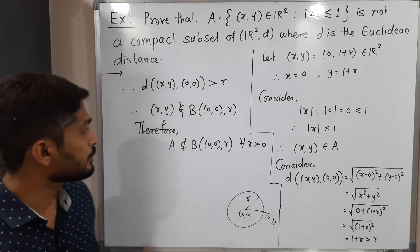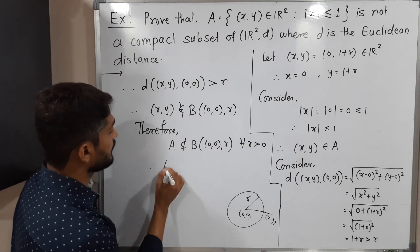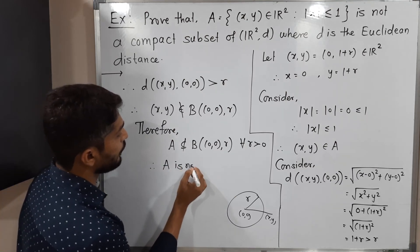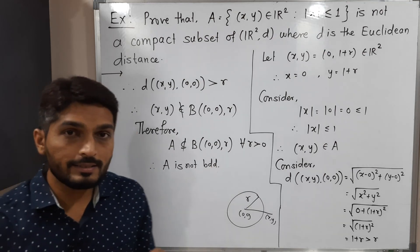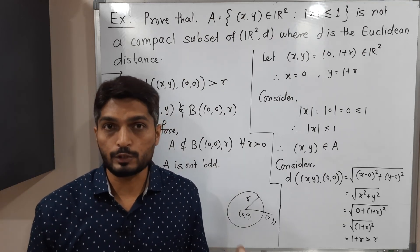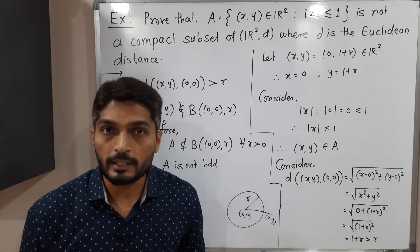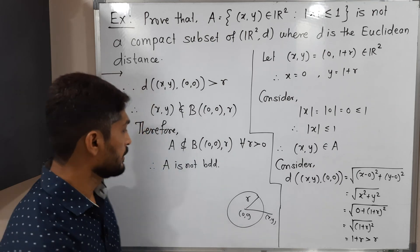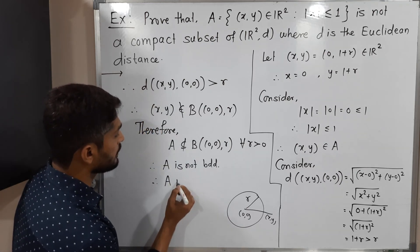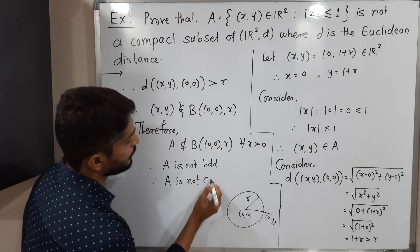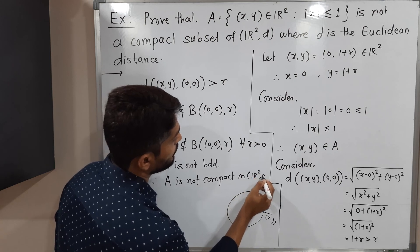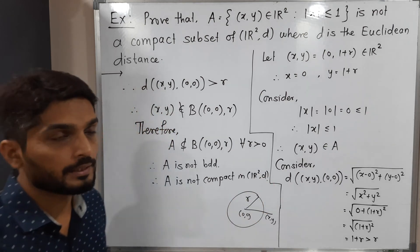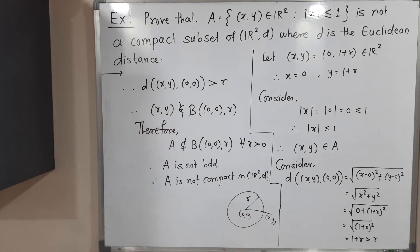Therefore A is not bounded. Since A is a subset of ℝ²(d) that is not bounded, it cannot be compact. Therefore A is not compact in ℝ²(d). This completes the example.